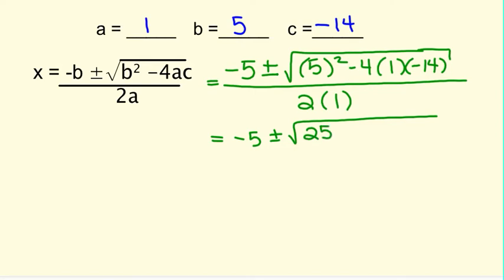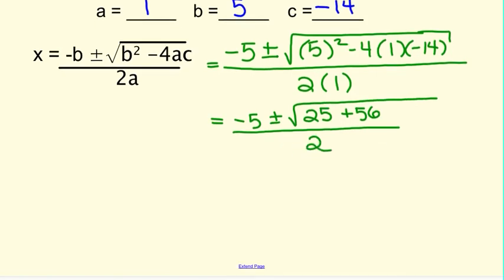And then negative 4 times positive 1 times negative 14 is a positive 56 over 2 times 1, which is 2. I'm going to go inside the radical again, and I'm going to simplify this. 25 plus 56 is 81.